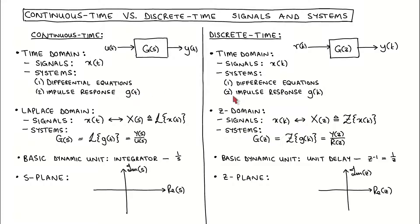Another way to model discrete time systems in the time domain is with the impulse response, which is the output of a system in response to a discrete time impulse input signal. The analogous continuous time model is the continuous time impulse response, which is the output of a system in response to a continuous time impulse input signal.